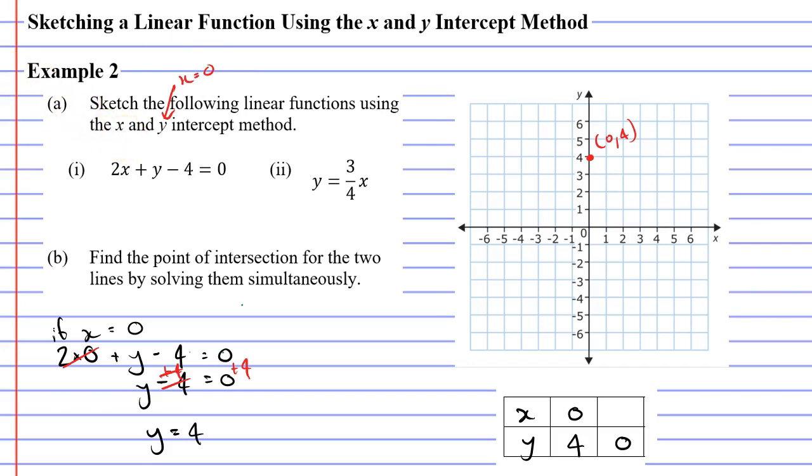Where do you think the x intercept occurs? Well where y equals zero. So let's look at what happens when y equals zero. We're going to get 2x plus 0 minus 4 equals 0. All I've done is taken this equation and substituted zero in place of y. Zero's always cancel out, so we get 2x minus 4 equals zero.